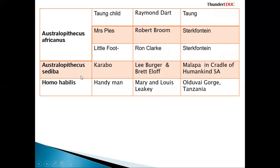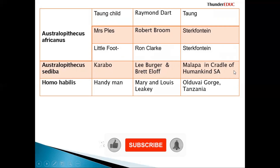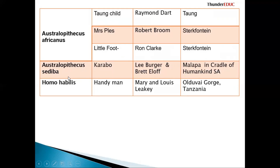We have Australopithecus sediba — this one is called Karabo. Who discovered it is Lee Berger, and where exactly is Malapa, in the Cradle of Humankind in South Africa. Karabo has some unique features — sometimes it's called a transitional fossil or a missing link between Australopithecus africanus and Homo habilis. So Australopithecus sediba has some characteristics of Australopithecus africanus and Homo habilis; therefore it is regarded as a missing link.